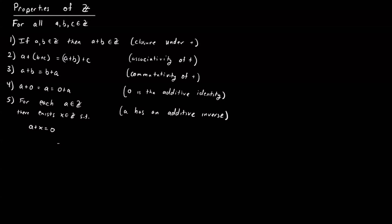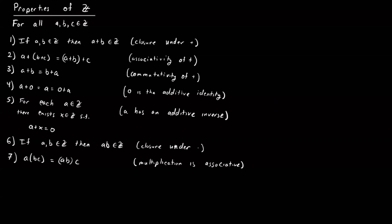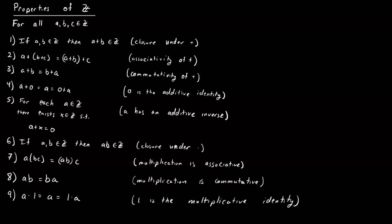What about multiplication? Multiplication has similar properties. We have closure under multiplication: the product of two integers gives another element of Z. Multiplication is associative: a times (bc) equals (ab) times c. Multiplication is commutative: a times b equals b times a. There's a special integer 1 called the multiplicative identity, where a times 1 equals a. The integers also satisfy: if a times b equals zero, then either a equals zero or b equals zero.